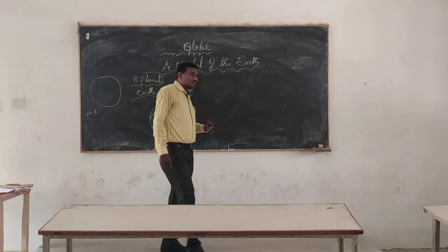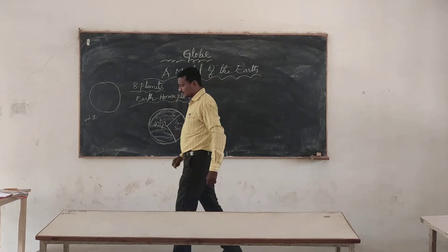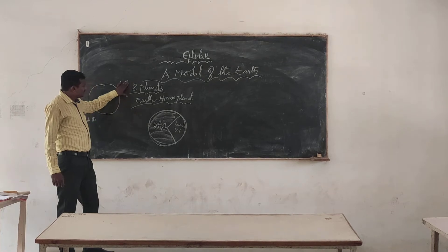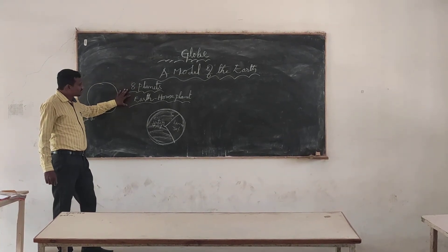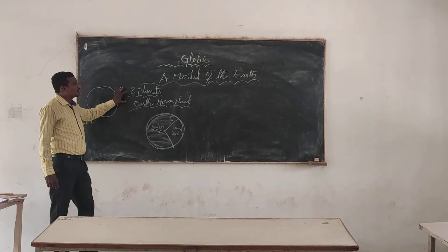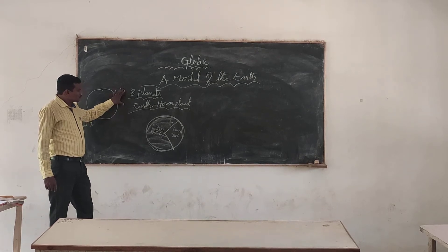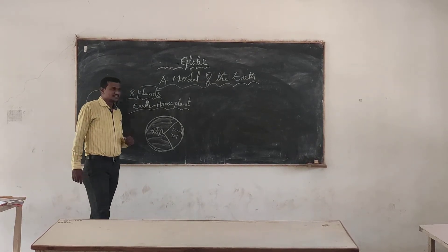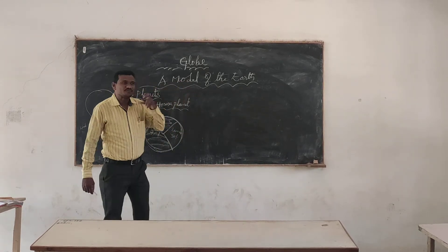We have discussed the shape of the Earth a number of times. The shape of the Earth is a little round, circular, or spherical in shape. In our lesson, there are two persons who talk about the shape of the Earth.